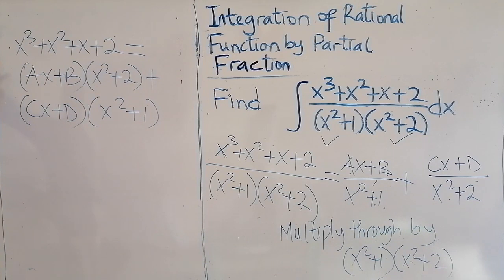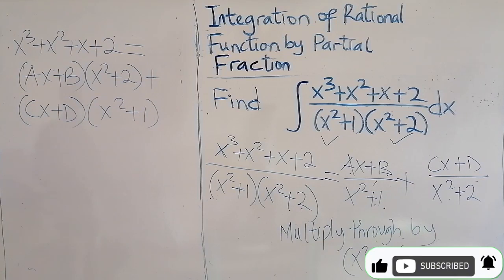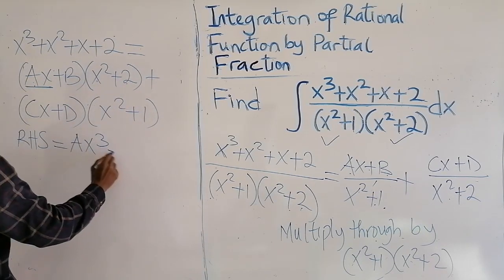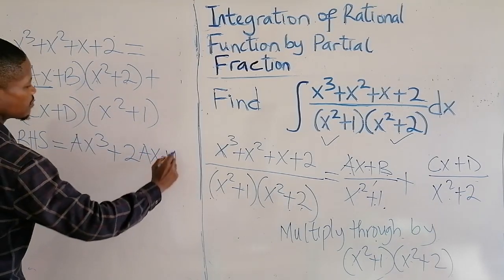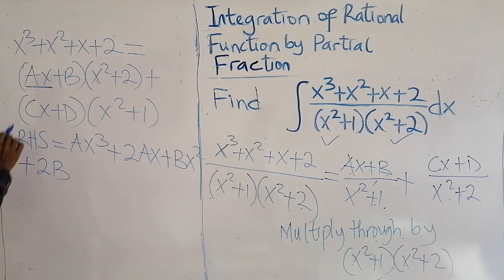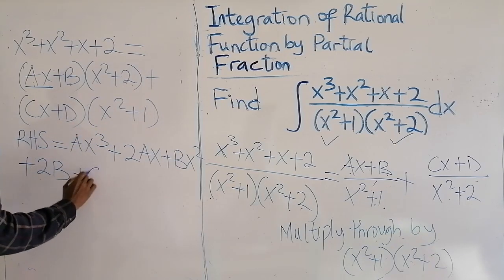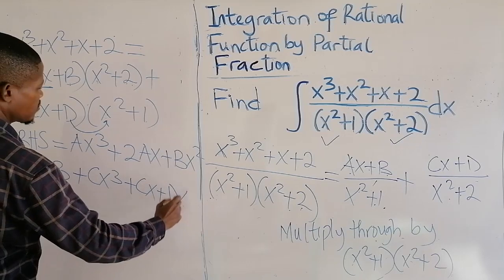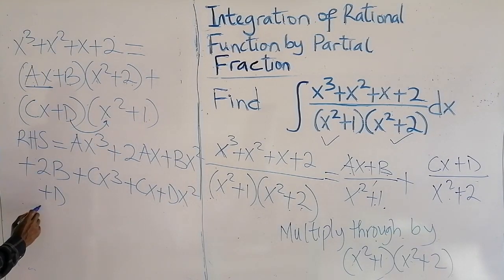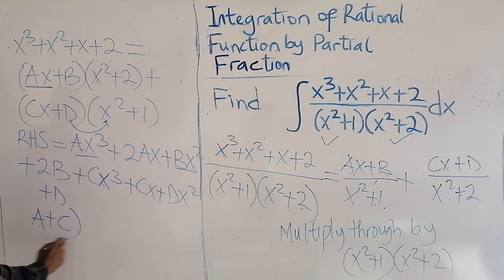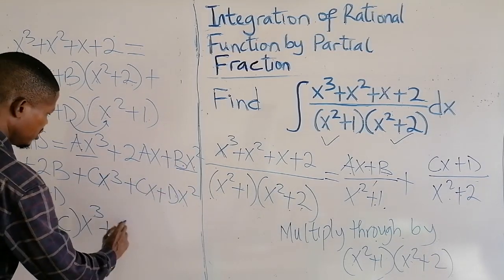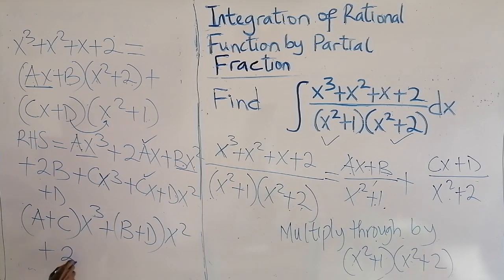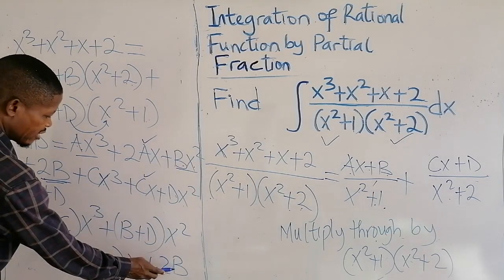Substitution will not work in this case, so what we're going to do is expand the expression and equate the coefficients. On the right-hand side: ax times x squared gives ax cubed; ax times 2 gives 2ax; b times x squared gives bx squared; b times 2 gives 2b. Then cx times x squared gives cx cubed; cx times 1 gives cx; d times x squared gives dx squared; d times 1 gives d. Bringing like terms together: (a + c)x cubed, (b + d)x squared, (2a + c)x, and (2b + d) as the constant.